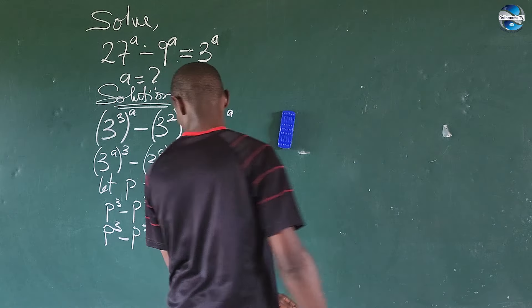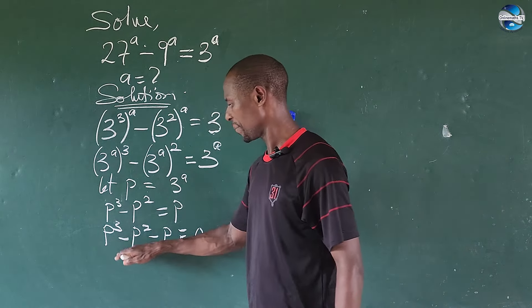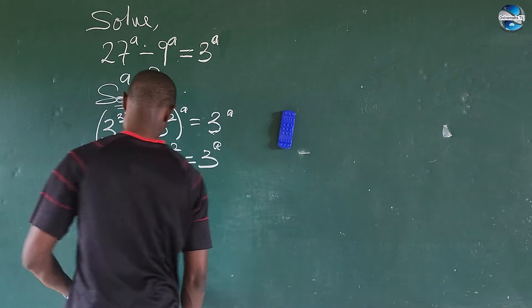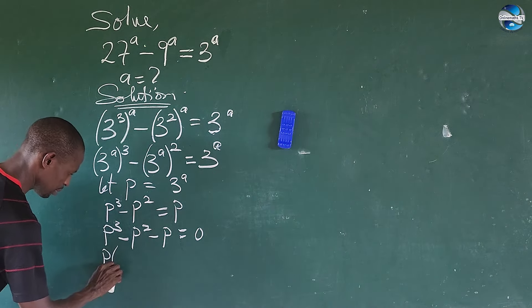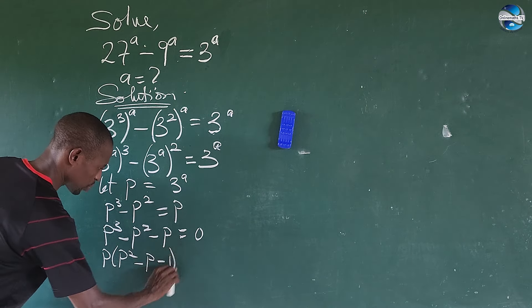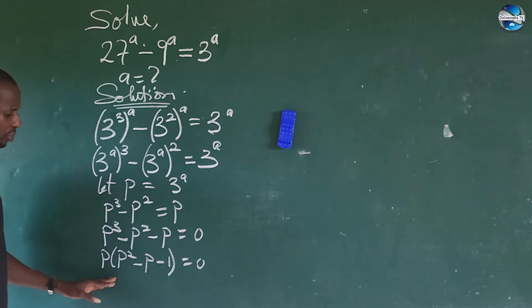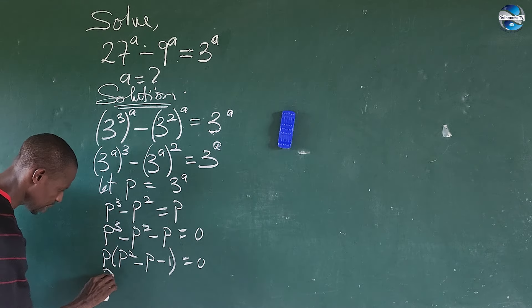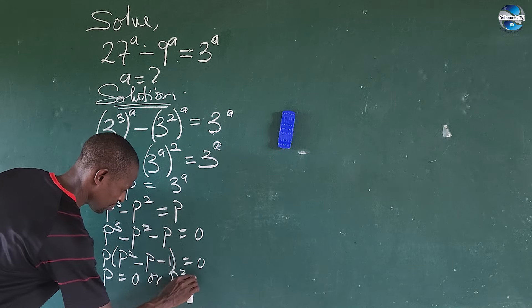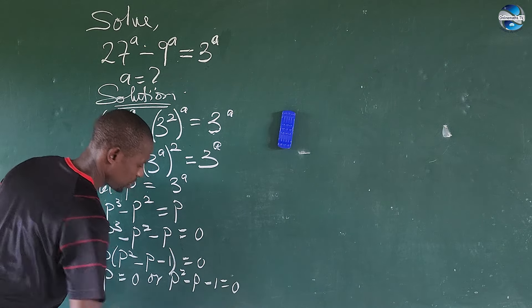If you check carefully, we have p in every term, so we can factor out p. Factoring out p gives us p(p^2 minus p minus 1) equals 0. Applying the zero product property, this gives us p equals 0, or p^2 minus p minus 1 equals 0.